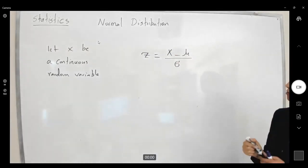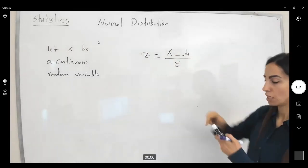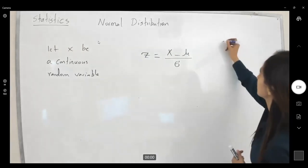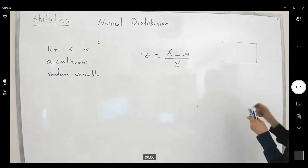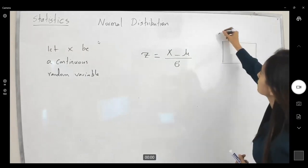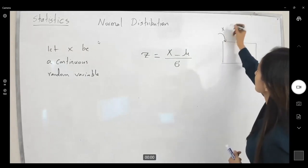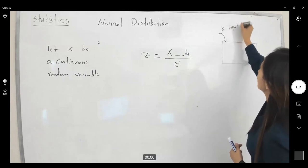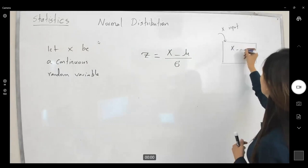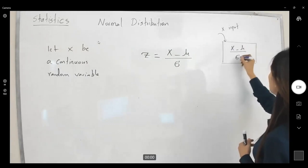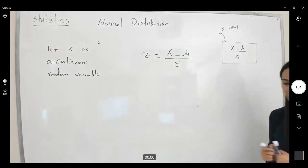We use this machine. X gets into this machine and you get your z as the value. So x is your input, the machine x minus mu divided by sigma, and it gives you z-values.